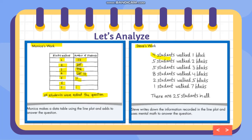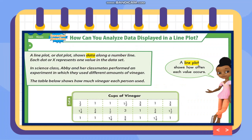Four students walk one block, five students walk two blocks, five students walk three blocks, eight students walk four blocks, two students walk five blocks, and one student walks seven blocks. By using mental math, he got 25 students. A line plot or dot plot shows data along a number line, and each dot or X represents one value in the data set.